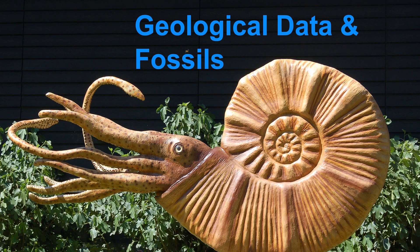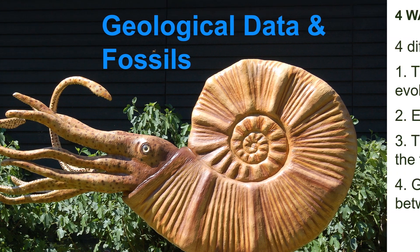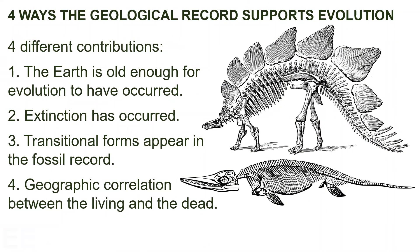When people think of evolutionary biology, they often think of fossils and ancient creatures, which is appropriate because fossils provide some of the strongest evidence for evolution. There are four different ways the geological record supports evolution as the mechanism that has led to the biodiversity we see today.